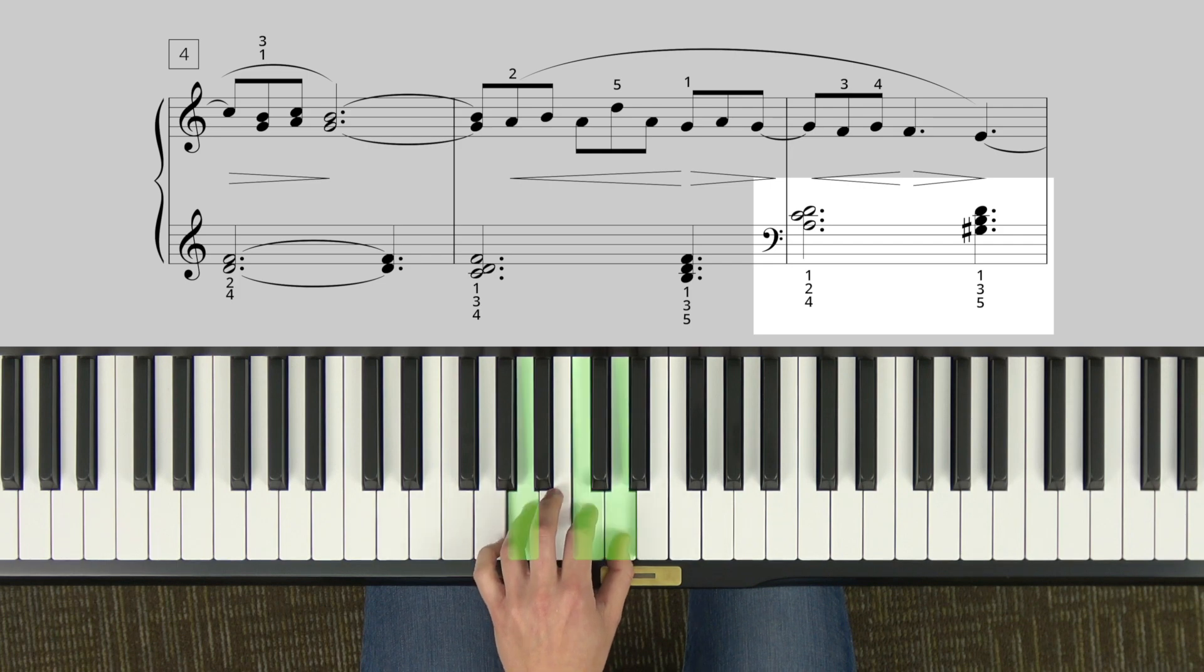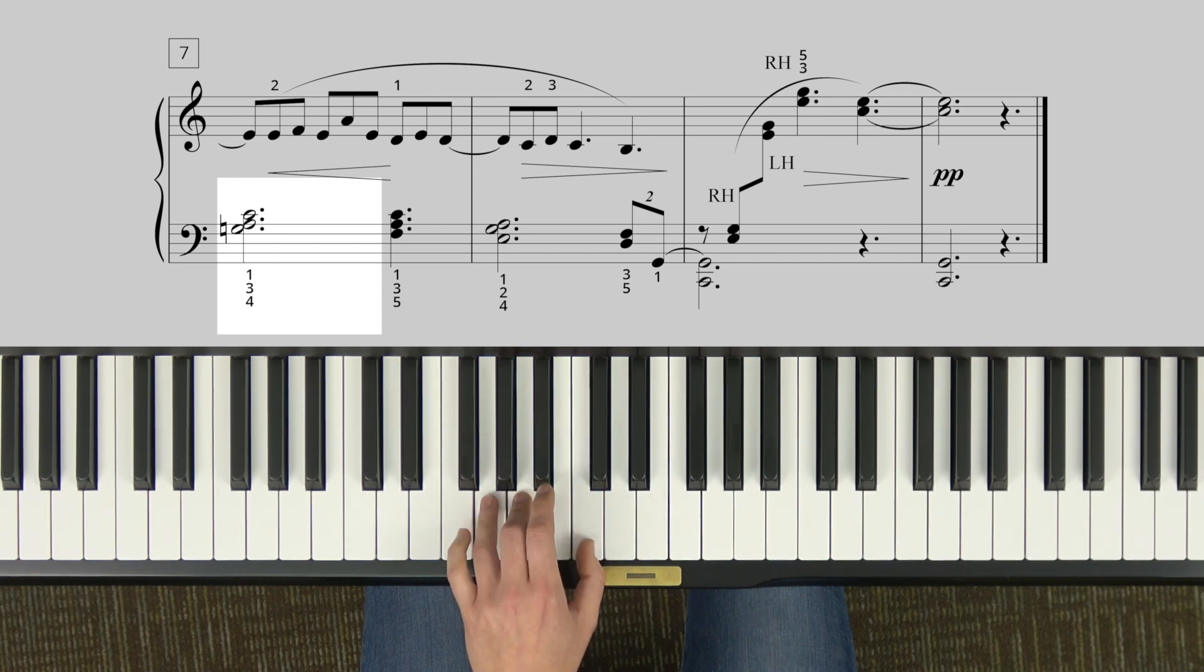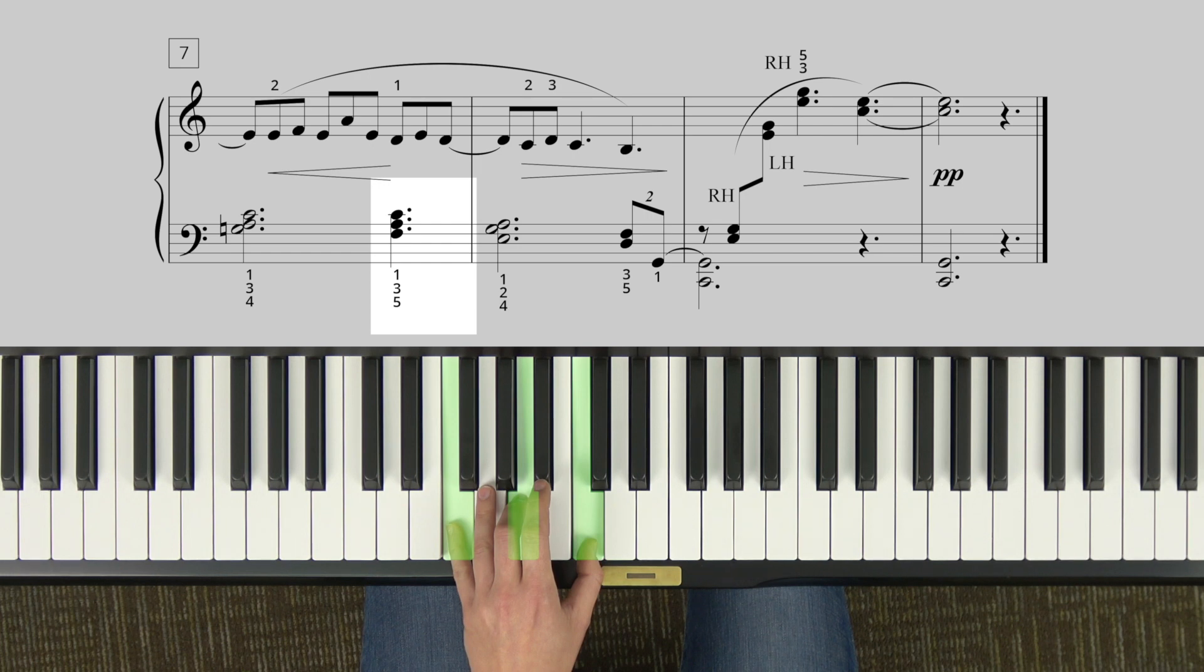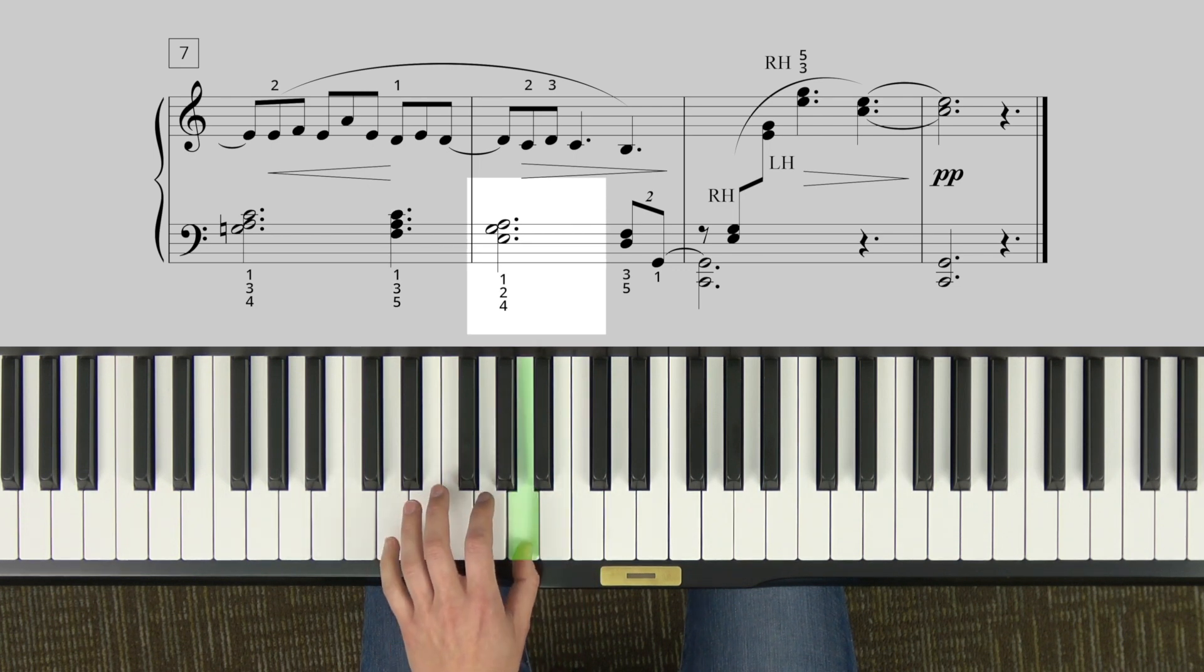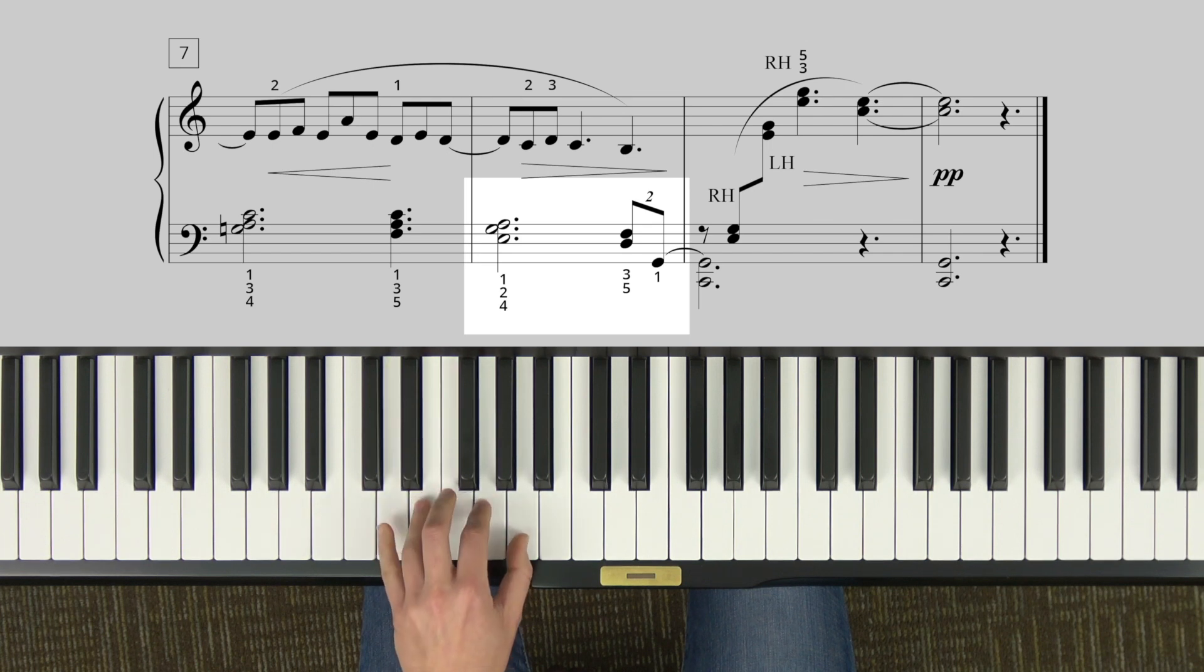So we start with our thumb on F. Our thumb comes down to D. And then the next chord, our thumb will be on C. Skip down to A. Step down to G. And then our thumb comes down to A. Step down to G. Skip down to E. And then we'll just play our three and our five finger for the last chord. So these two fingers move down to these two fingers.